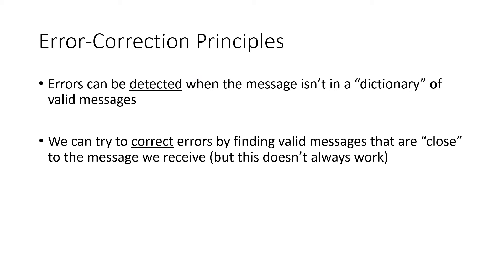So these give us some principles of error correction. An error can be detected when the message we receive isn't in our dictionary of valid messages. And we can try to correct errors by finding valid messages that are close to the message that we receive. But as we've seen, this doesn't always work.